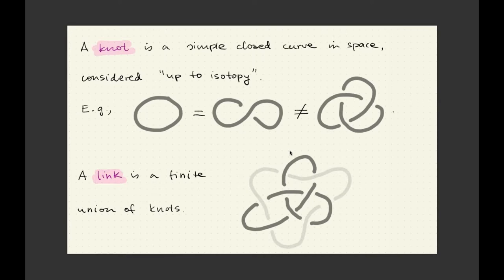So what is knot theory? It is about simple closed curves in regular three-dimensional space, which we consider after deformations. On this slide, you can see the simplest possible example, the so-called trivial knot or unknot, which is the same as the same curve if you just bend it a little bit. However, it is not the same as the one drawn right next to it, where there is actually some knotting going on. You should picture a piece of string that you tie into an interesting knot, and then you fuse the two ends of the string together so that you are not able to separate it anymore. It turns out there are infinitely many ways of making different knots, and knot theory is about sorting them out, classifying them — figuring out all the different ways of making a knot.